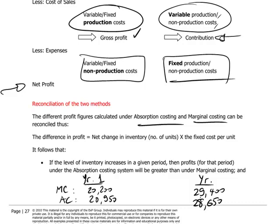What is interesting is the comparison for a given year — why do the marginal costing and absorption costing results differ from each other? After all, we're talking about the same company with the same underlying story, which involved the production of 1,000 units and the sale of 950 units.